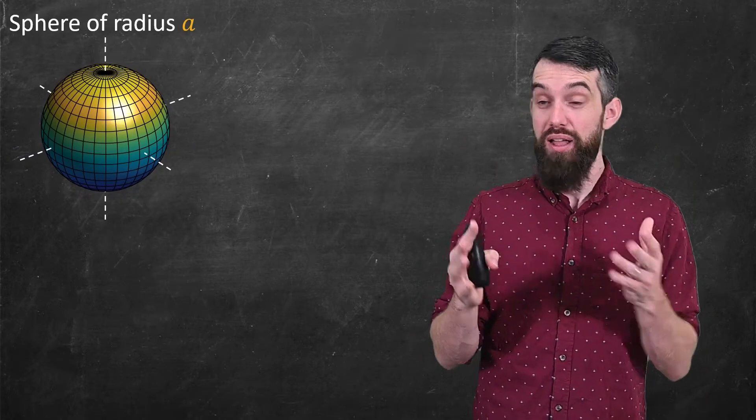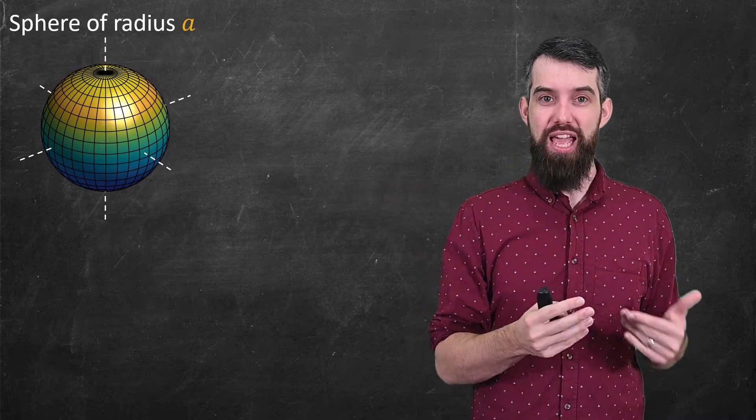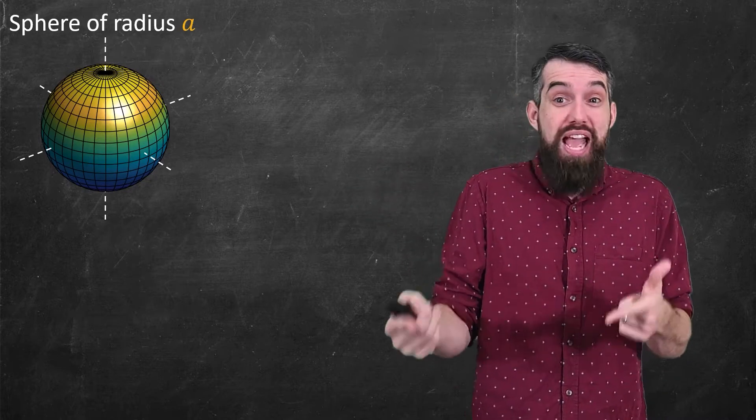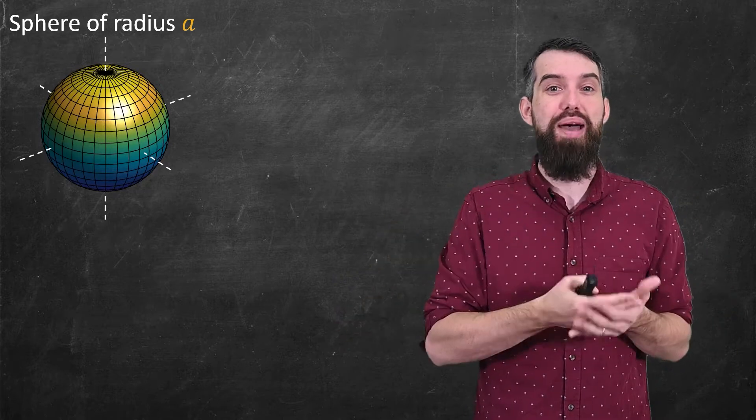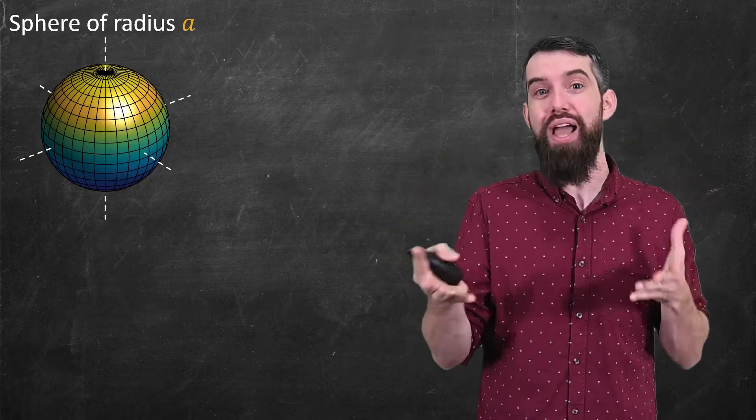What is the surface area of a sphere of radius a? You might be able to quote that the answer is 4πa², perhaps you've memorized this at some point in your mathematics education, but why? Why is that the case?